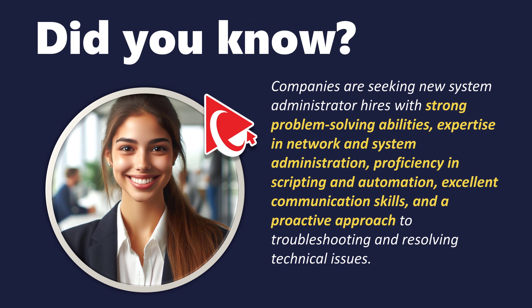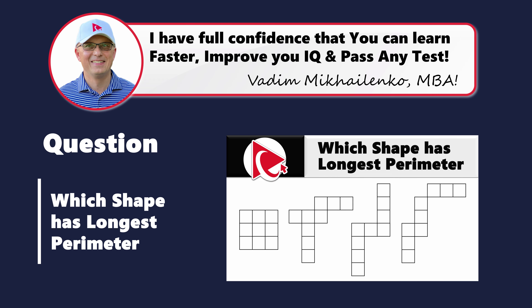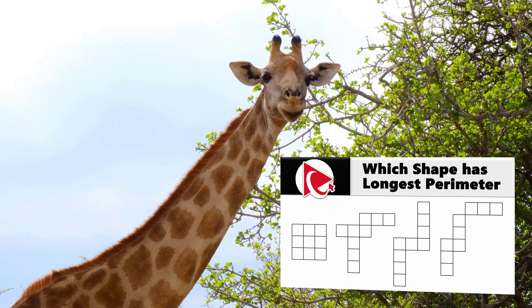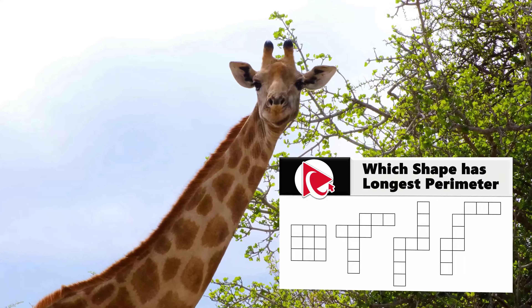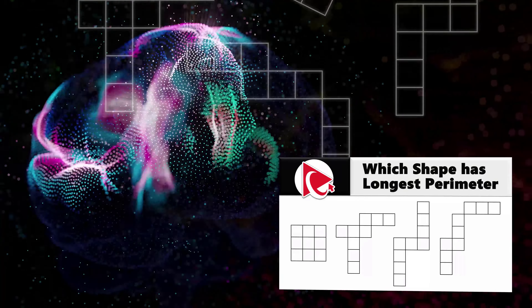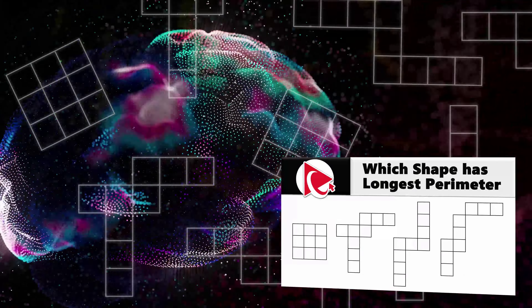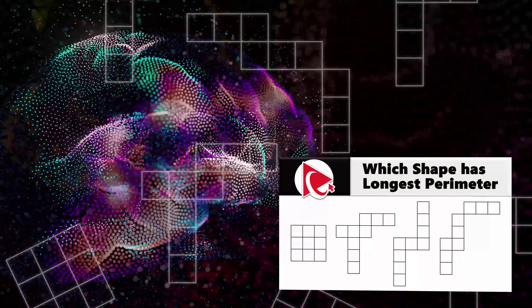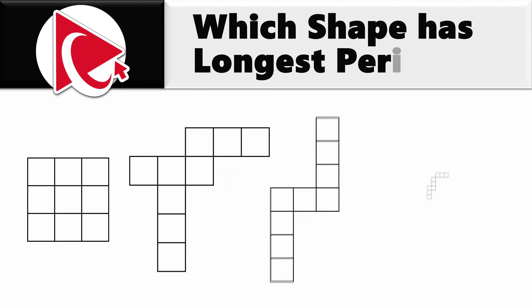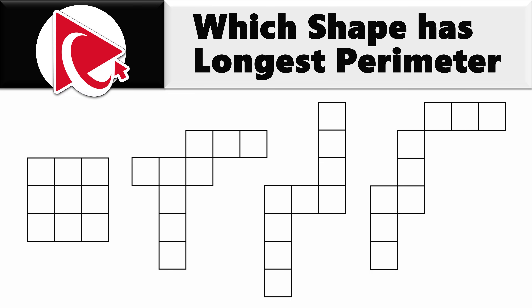Let's face it, cracking this particular question is like teaching a giraffe to limbo — a tall order — but once you bend your mind around it, the success is a real stretch. This question might be secretly measuring our ability to handle mental acrobatics to deal with unusually looking shapes. Speaking about shapes, you're presented with 4 shapes, and 3 of them are very unusual, and you need to determine which shape has the longest perimeter.